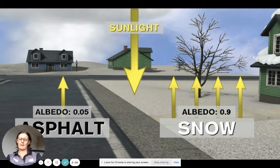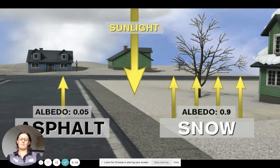Looking at the Earth's surface, we can see different levels of albedo. If I talk about snow, you can see with the four arrows there that it has a much higher level of albedo, which means more solar energy will be reflected.